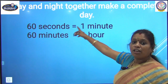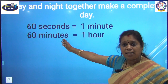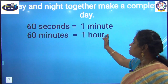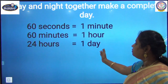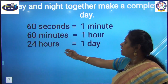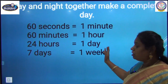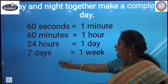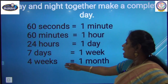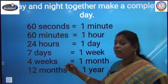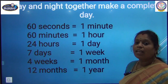60 seconds equal 1 minute. 60 minutes equal 1 hour. 24 hours equal 1 day. 7 days equal 1 week. 4 weeks equal 1 month. And 12 months equal 1 year.